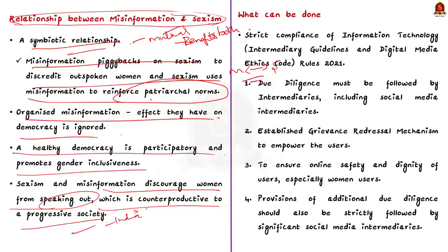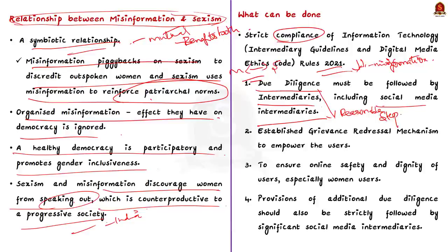So what can be done to address this? See strict compliance of information technology rules 2021 might help us to reduce the spread of online misinformation. So let us discuss some of the provisions of the rules which must be followed strictly to reduce online misinformation. The first provision is that due diligence must be followed by intermediaries, especially social media intermediaries. Due diligence is nothing but a reasonable steps taken by a person to avoid committing an offense. The second provision is regarding grievance redressal mechanism. It is to receive complaints from the users or the victims. See intermediaries must appoint a grievance officer to deal with such complaints and they should share the name and contact details of such officers. And the grievance officer should acknowledge the complaint within 24 hours and resolve it within 15 days from the receipt.